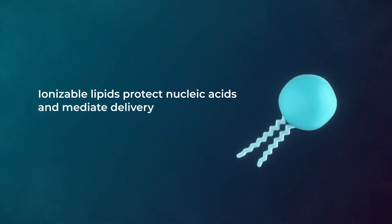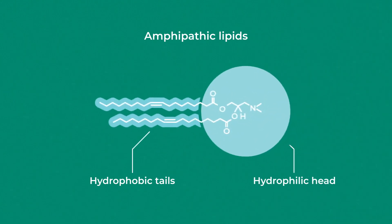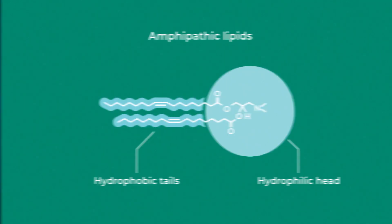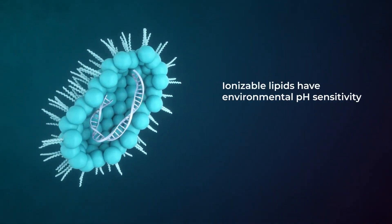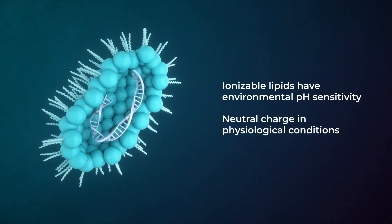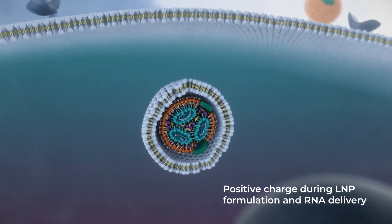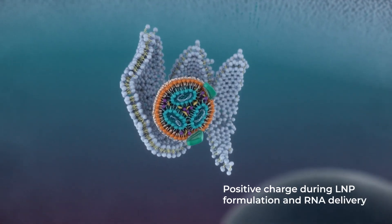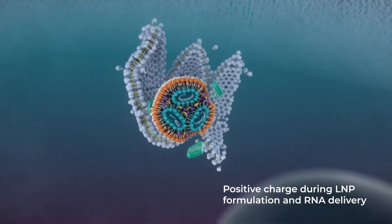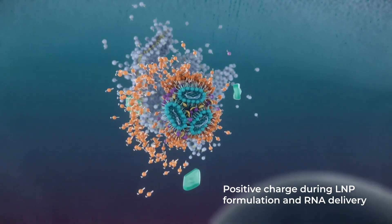They have hydrophobic hydrocarbon tails and a hydrophilic polar head group. The unique value of ionizable lipids is their environmental pH sensitivity — they hold a neutral charge at physiological pH to minimize toxicity, and shift charge under acidic pH to enable RNA binding during formulation and endosomal escape during delivery.